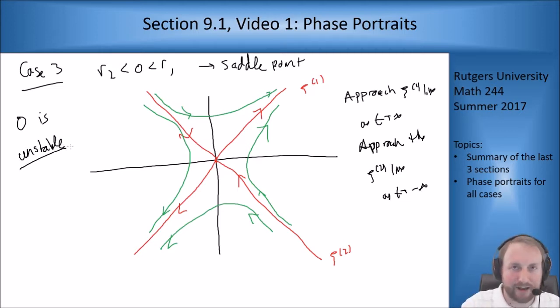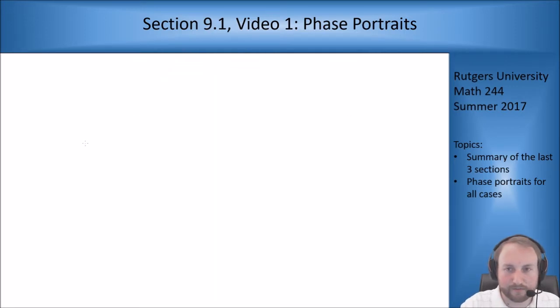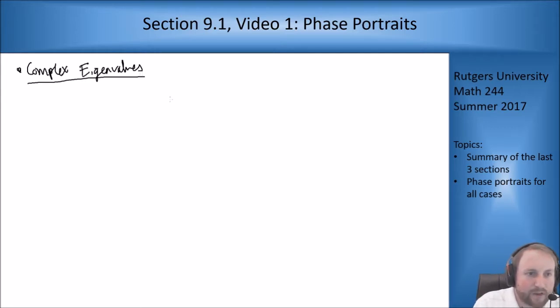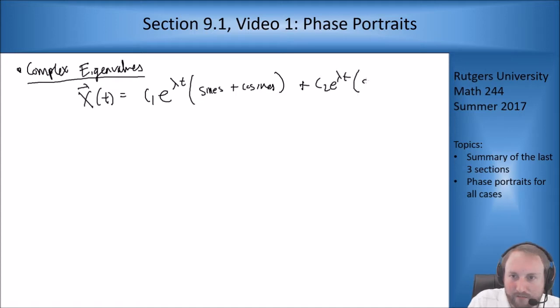The next thing we dealt with was complex eigenvalues. The general solution there is harder to write out. But you end up with something that looks of the form c1 e to the lambda t times some sines or cosines plus c2 e to the lambda t times more sines and cosines. I'm writing it this way because while there is a general way to write it, it looks kind of weird. It's easier to think of it as you just get sines and cosines times some exponential terms. There are different cases based on what lambda is and which way it rotates.